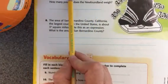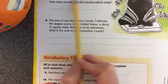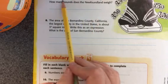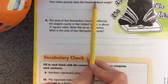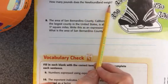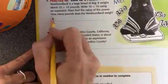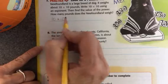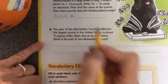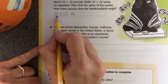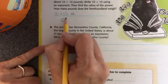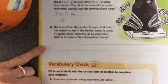The Newfoundland is a large breed of dog. It weighs about 10 times 10 pounds. Write 10 times 10 using an exponent. Then find the value of the power. How many pounds does the Newfoundland weigh? So I have 10 times 10, and I need to find out what that answer is, 10 times 10, and then I also need to write it as an exponent. So I write down the base, which is 10, and then my exponent is how many times 10 is written down.